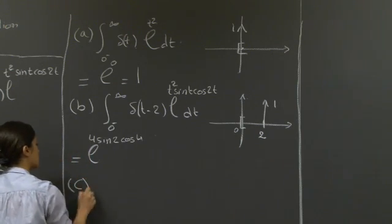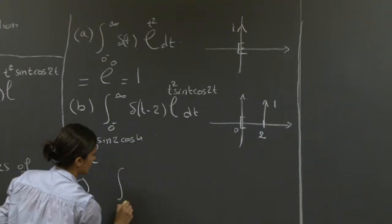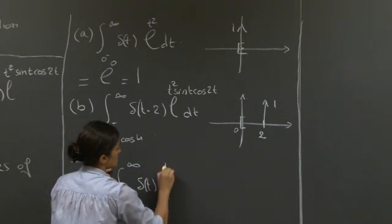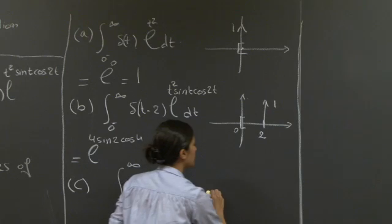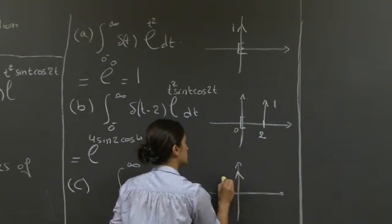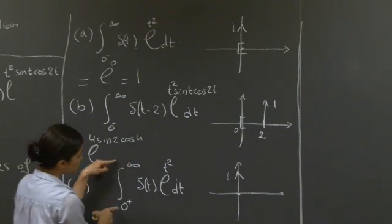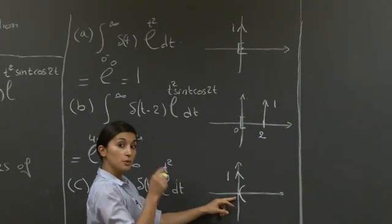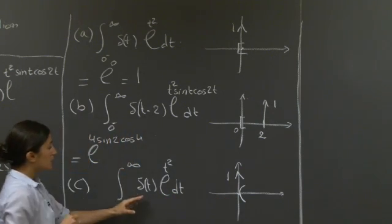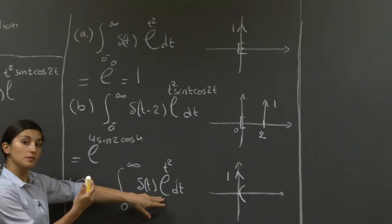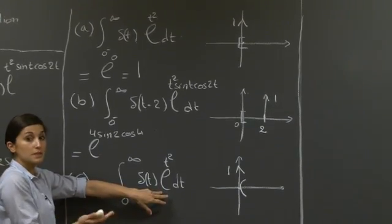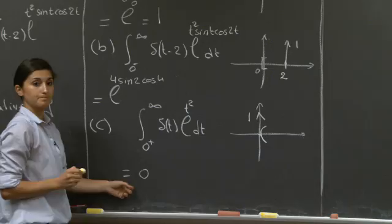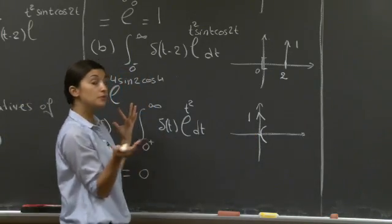For the last integral, we return to the first one except now the bounds are from 0 plus to infinity. The delta function is centered at 0, but the interval of integration is an open interval that does not include t = 0, where delta is non-zero. So everywhere, the function is just multiplied by 0 — it's like the delta fell off our interval of integration — and we're left with 0.